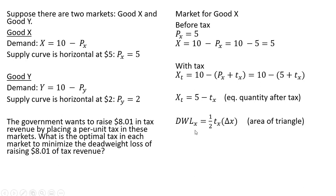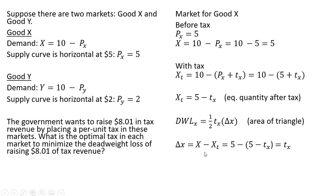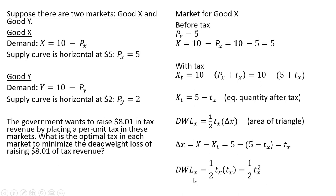The deadweight loss is just the area of a triangle: one-half base times height. The height of the triangle is going to be the size of the tax, and the change in X reflects the change in equilibrium quantities before and after the tax. The change in X is the equilibrium quantity before the tax (which is 5) minus the equilibrium quantity after the tax, X subscript T, which is 5 minus the tax. This simplifies to the tax in the market for good X. So putting T subscript X in for the change in X, we have an expression for the deadweight loss in the market for good X.